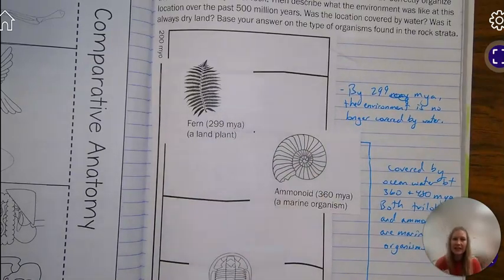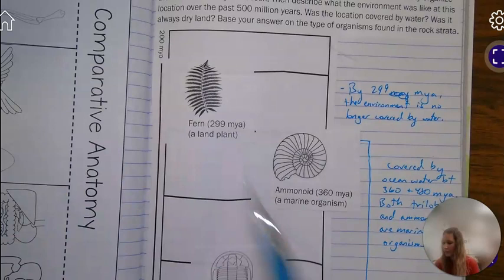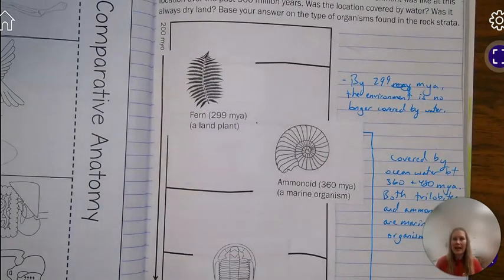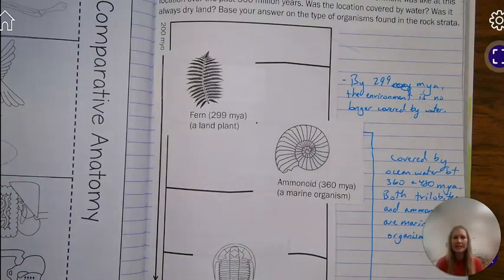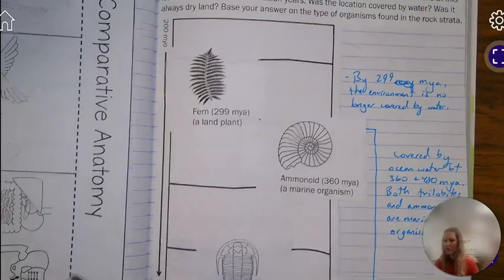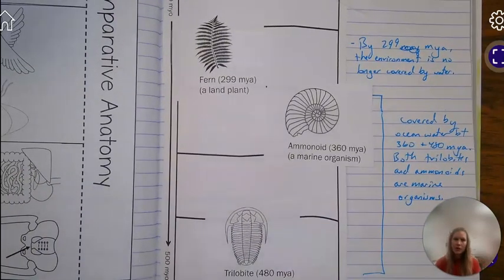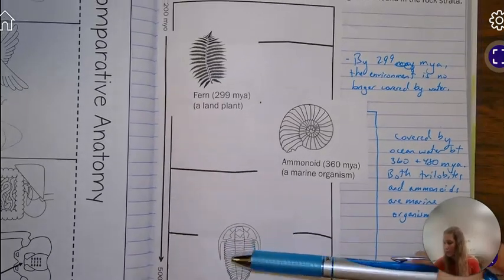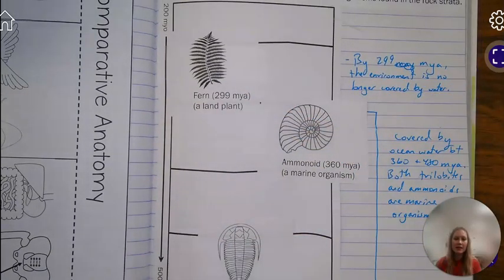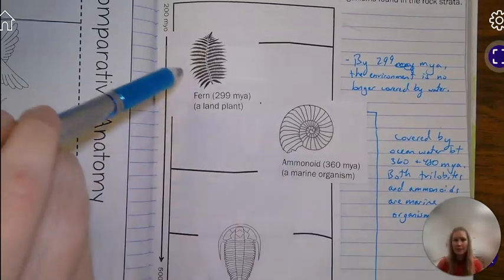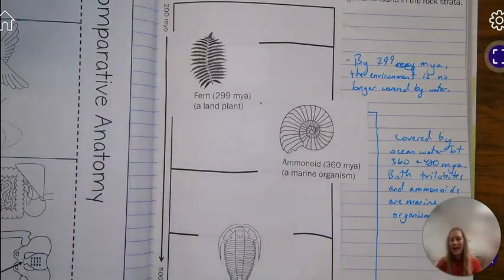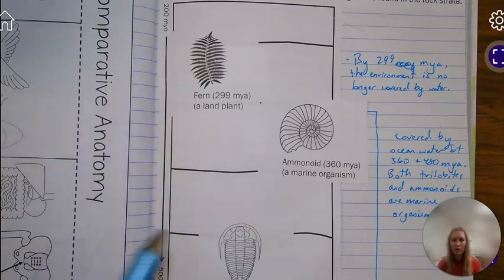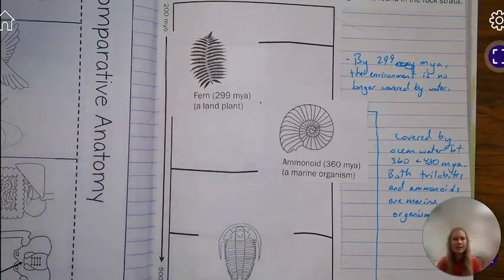So using fossils can help scientists, evolutionary scientists or people who study evolution, to see how organisms, different organisms are found in different places based on the environment. By looking at these different organisms, we can see how this area changed over the course of about 500 million years because of the different types of organisms that were found in that single location.